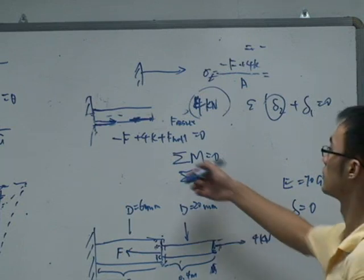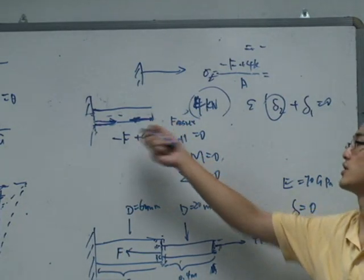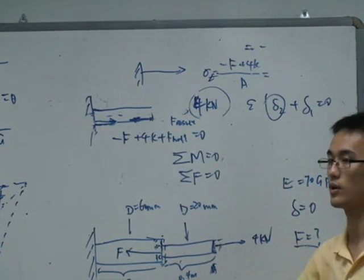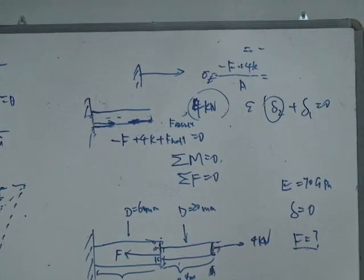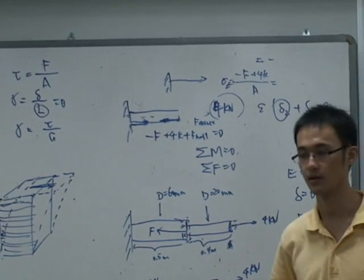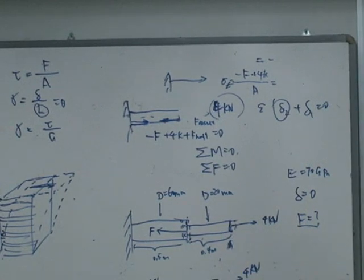But at the beginning, we don't need to know exactly which direction it is, whether it's in this direction or whether it's in that direction. What we need to do is just try to do using the formulas. Later on, we find that it's negative, then it's the opposite direction as we assume.